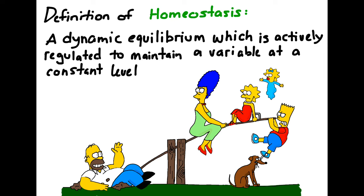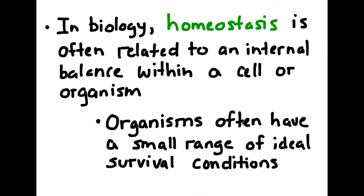Homeostasis is a dynamic equilibrium or balance which is actively regulated to maintain a variable at a constant level. In biology, homeostasis is often related to an internal balance within a cell or an organism, because so many creatures have a very narrow range of conditions in which they can survive.